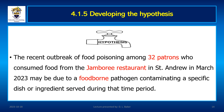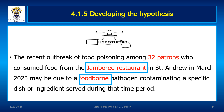In developing our hypothesis, we could write: 'The recent outbreak of food poisoning among 32 patrons who consumed food from the Jamboree restaurant in St. Andrew in March 2023 may be due to a foodborne pathogen contaminating a specific dish or ingredient served during that time period.' The hypothesis should address the most likely source of exposure to the agent — in this case, the restaurant — and the mode of transmission, which here is foodborne vehicle transmission. It should also explore possible future control measures and take into account the disease process and the population at risk.